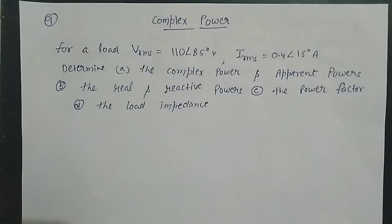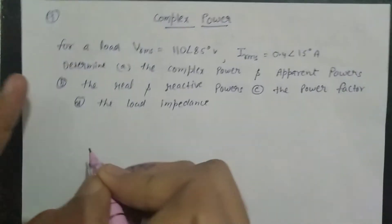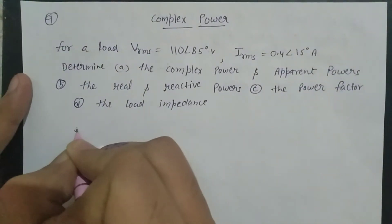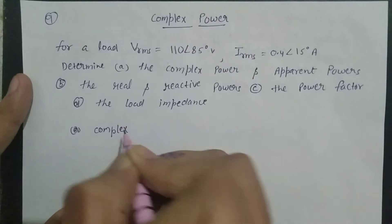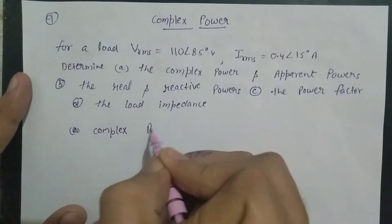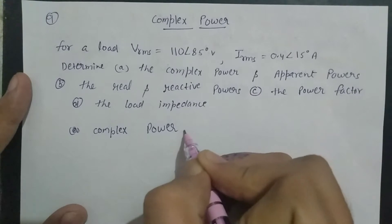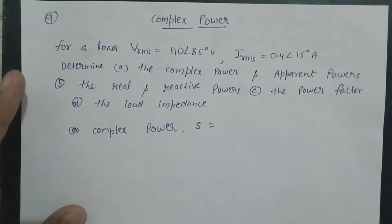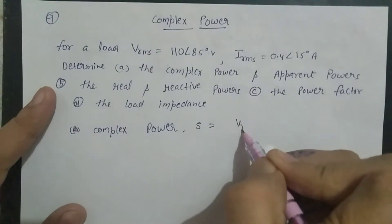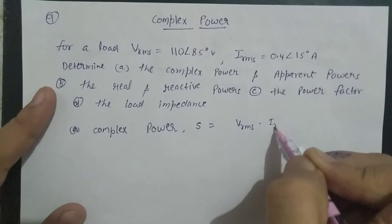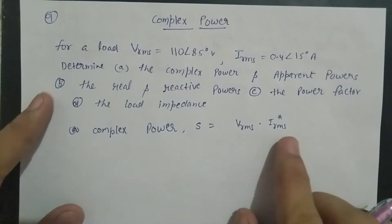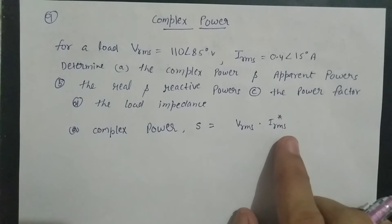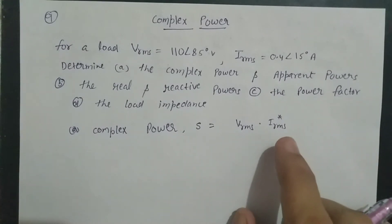पहले निकालते हैं complex power। Complex power को S से represent करते हैं। यह होता है V_RMS into I_RMS का conjugate, यानि voltage को current के conjugate से multiply करते हैं। Current का conjugate लेना है।